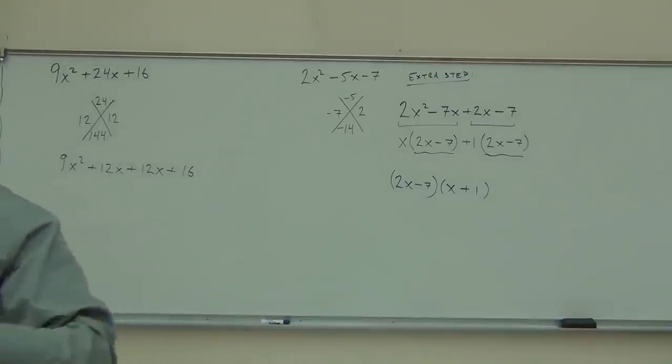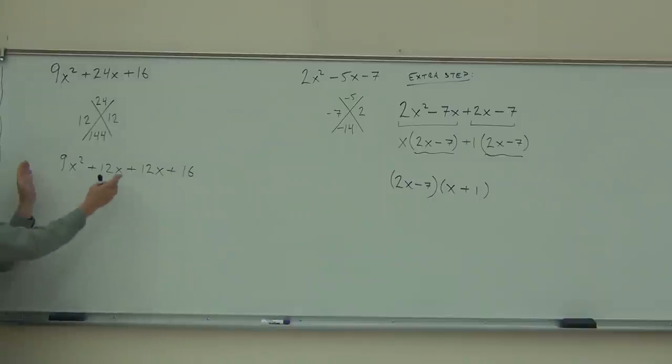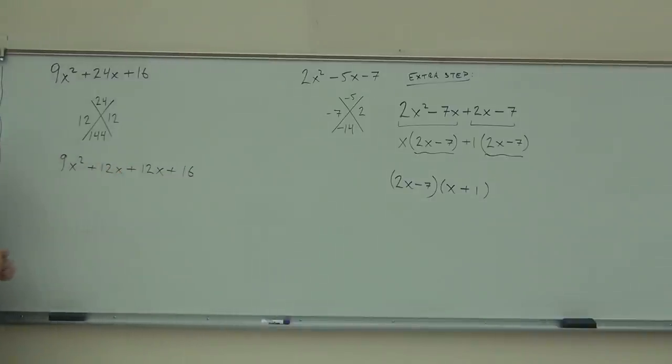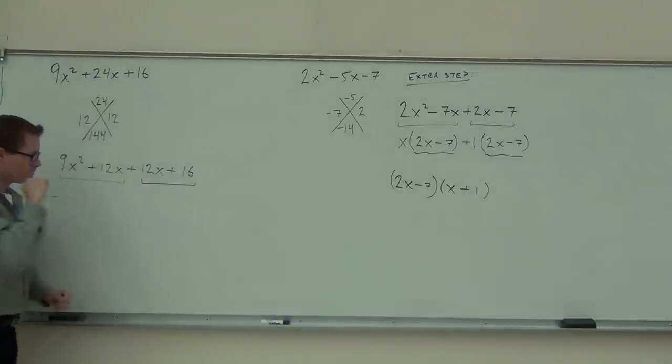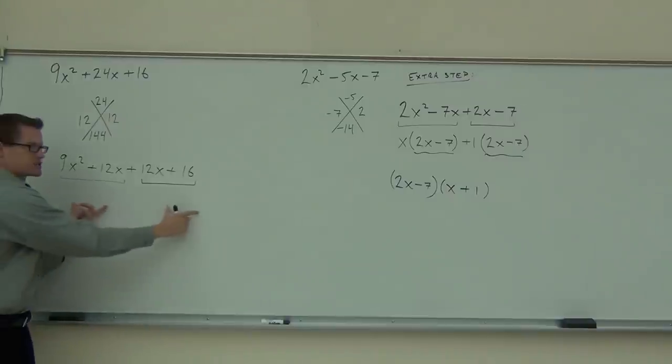We do what? And once we have our four terms, four terms should key you in on something. Factor by grouping. Great. Yeah, factor by grouping. That means we look for our greatest common factor here, and the greatest common factor here. On your own, I want you to greatest common factor that one. And on your own, I want you to greatest common factor that one. You know you did it right if you end with a similar factor.